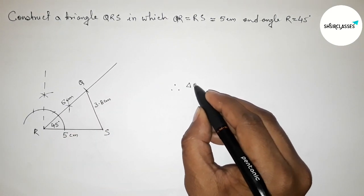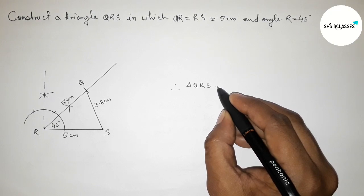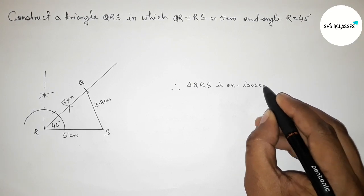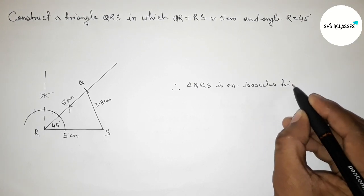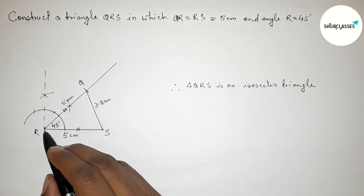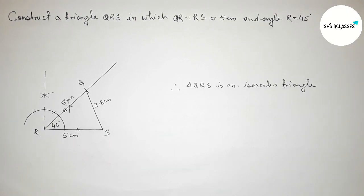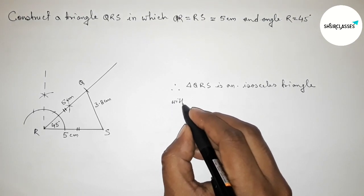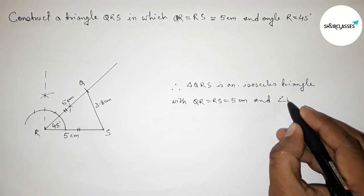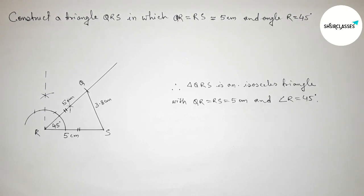Triangle QRS is an isosceles triangle because two sides of this triangle are equal — this side and this side are equal. So triangle QRS is an isosceles triangle with QR equals RS equals 5 centimeters and angle R equals 45 degrees. That's all, thanks for watching.